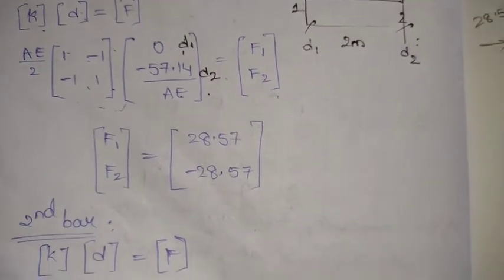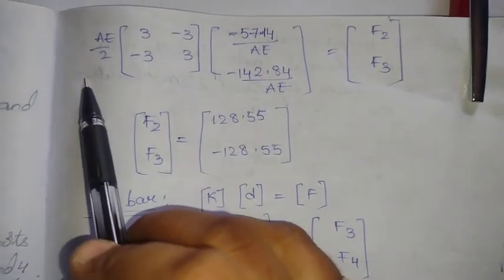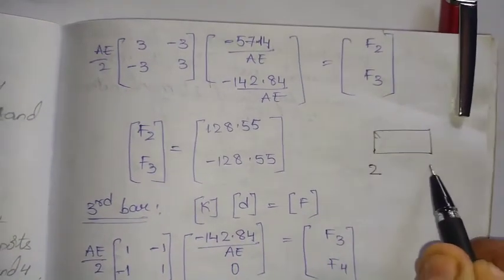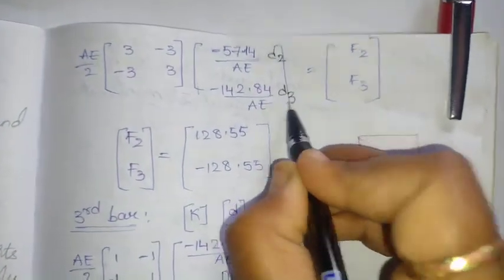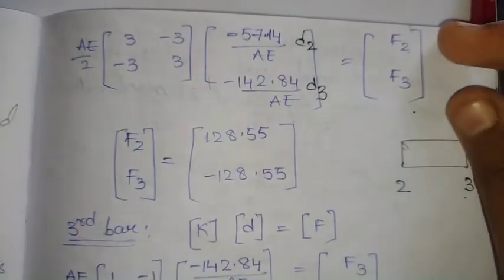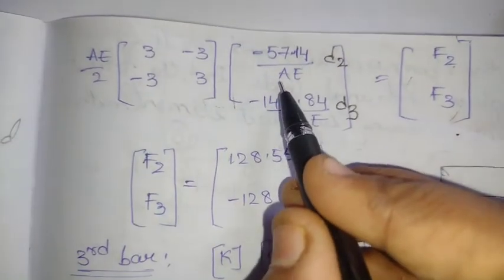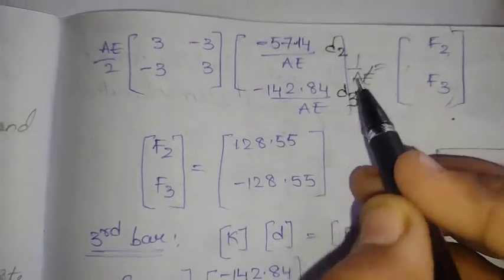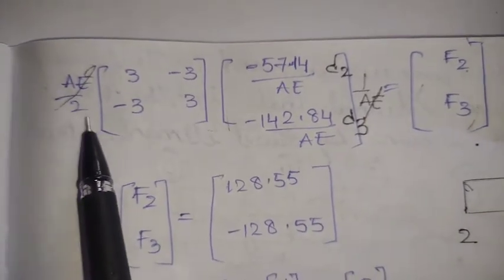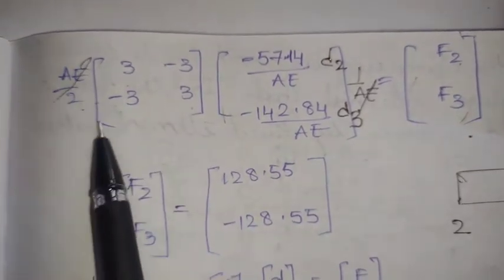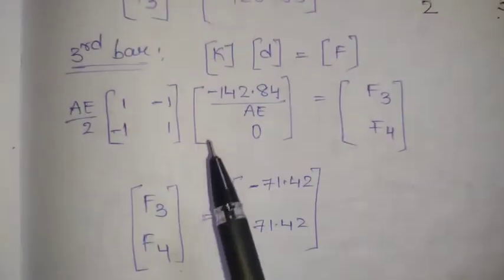For the second bar, we again apply KD = F. The stiffness matrix for bar 2 is known, and bar 2 is between nodes 2 and 3, so the displacement vector is [D2, D3]. Multiplying through in the calculator — taking AE as a constant factor and substituting the matrix entries (3/2, -3/2, -3/2, 3/2) — we obtain the forces F2 and F3 for the second bar.